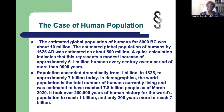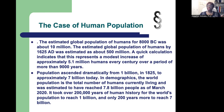Let's look at human population. The estimated global population of humans for 8,000 BC was just about 2 million. The estimated global population by 1625 AD was estimated at about 500 million. When you do a quick calculation, this shows us it's about 5.1 million humans every century over a period of more than 9,000 years.